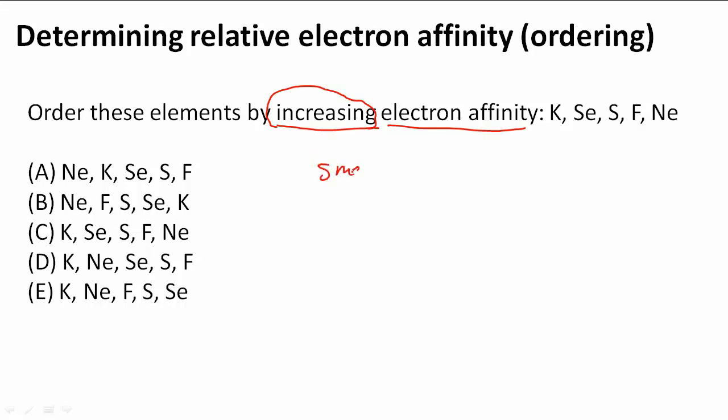That means we're going to have the smallest electron affinity on the left and then we're going to go to the largest electron affinity.